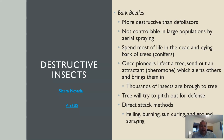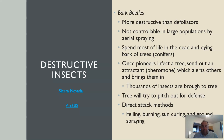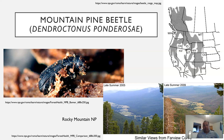To stop bark beetles you need direct attack methods. You can fell dead and dying trees, do some prescribed burning, use sun-curing by opening up the canopy to let solar radiation in — which they can't handle — and do ground spraying by actually getting to the trees and spraying them directly. Ground spraying is more effective than aerial application for bark beetles.